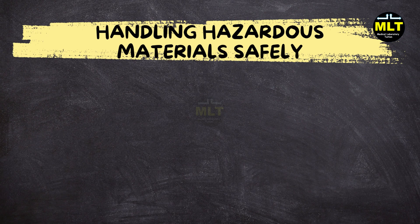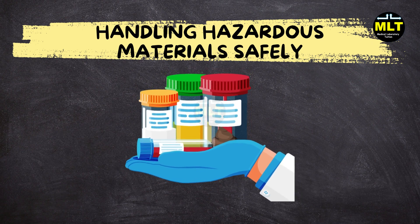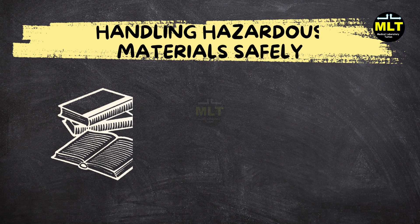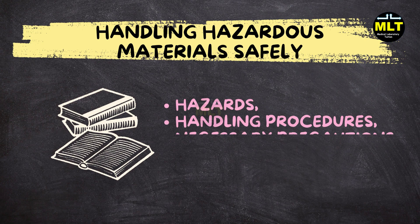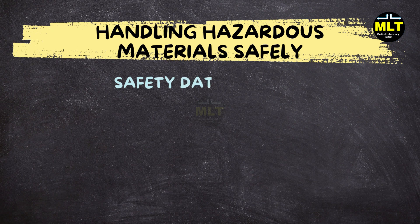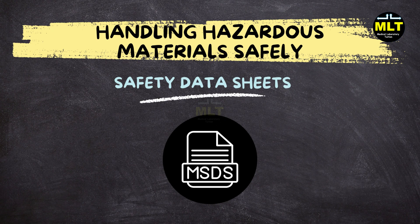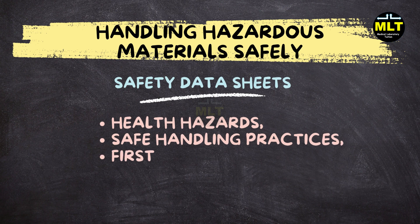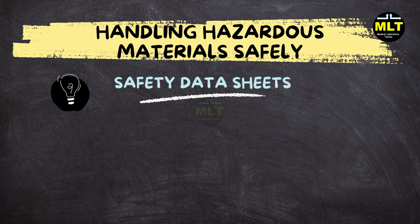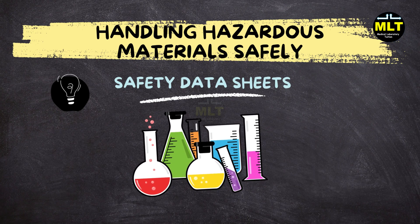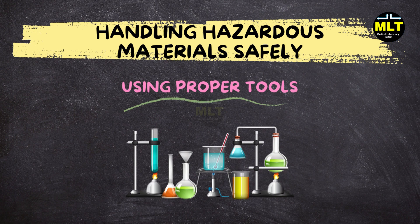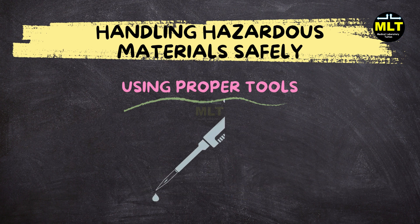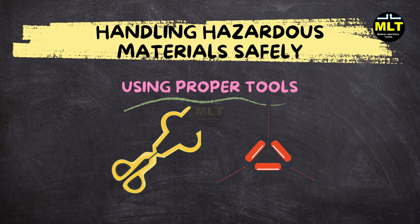Section 3: Handling Hazardous Materials Safely. Handling hazardous materials safely is important to avoid any accidents. Reading labels: Always read labels on chemicals and biological samples. Labels provide essential information about hazards, handling procedures, and necessary precautions. Safety Data Sheets (SDS): Familiarize yourself with SDS for each chemical you use. SDS contain critical information on health hazards, safe handling practices, and first aid measures in case of exposure. Tip: Create a quick reference guide for commonly used chemicals in your lab, summarizing key SDS information for easy access. Using proper tools: Employ the correct tools and techniques to minimize spills and accidents. For instance, proper pipetting techniques can help avoid spills when transferring liquids. Always use tools designed for the specific task at hand.